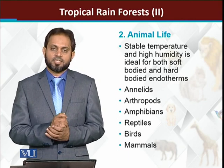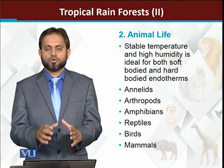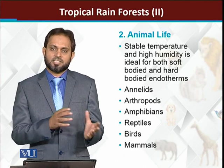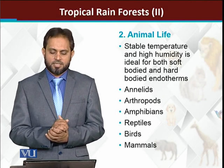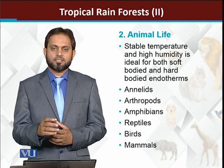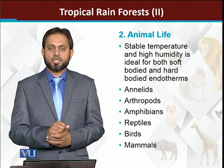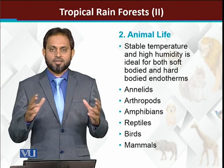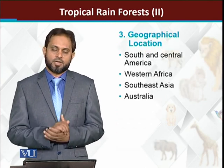Nematodes, annelids, and arthropods are reported from tropical rainforests. Among the vertebrates, amphibians and reptiles are particularly well-represented in tropical rainforests because these two are cold-blooded and tropical rainforests provide optimum temperature with minimal temperature fluctuation. There are also huge numbers of birds and different types of mammals living in tropical rainforests.